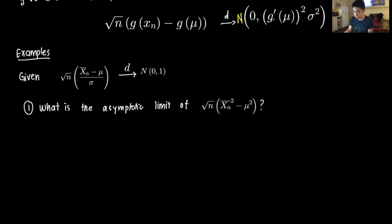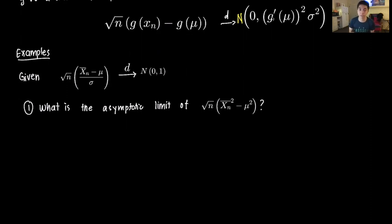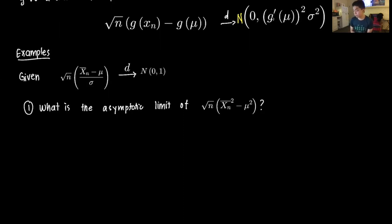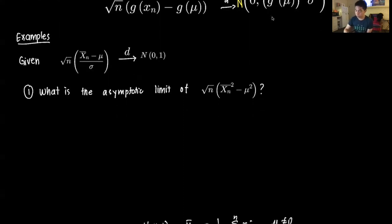Suppose we are given that √n · (x̄ - μ)/σ converges in distribution to N(0,1) — the basic Central Limit Theorem — and we are asked: what is the asymptotic limit of √n · (x̄² - μ²)? We can use the delta method.